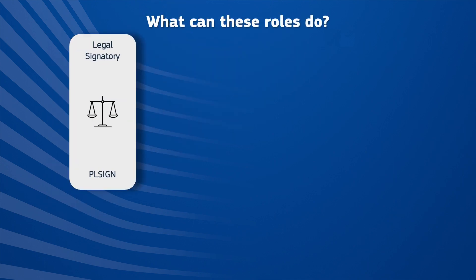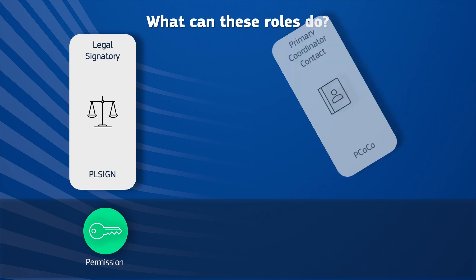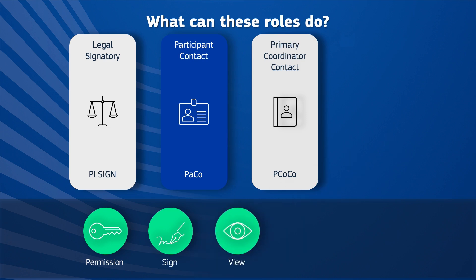PL signs share the same access and editing permissions as the top project roles of their organization — for example, either the primary coordinator contact or the participant contact. They also have the authority to sign the Declaration of Honor or view contracts and amendments through the EU Funding Intenders Portal on behalf of the organization.